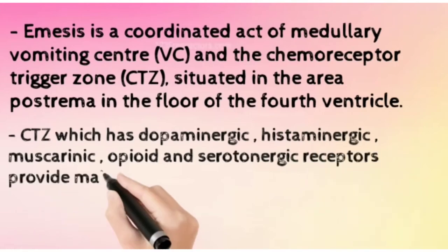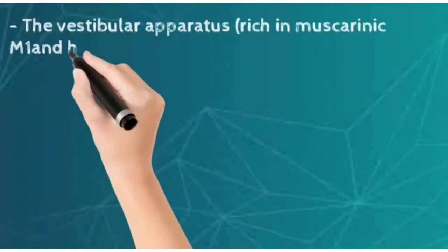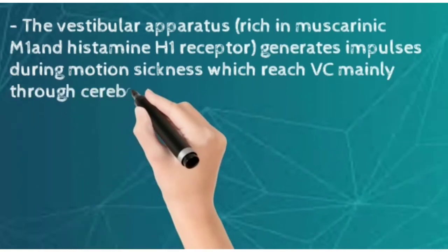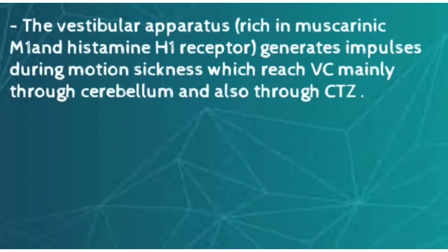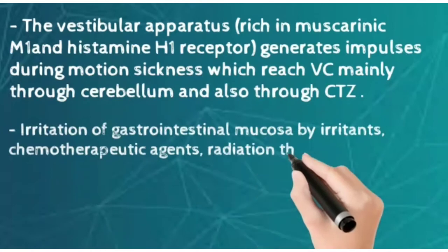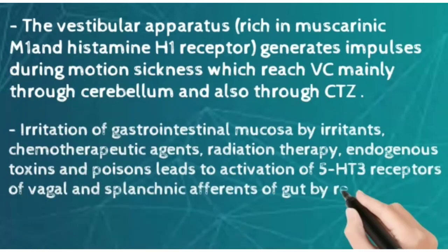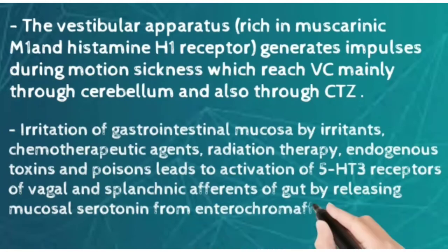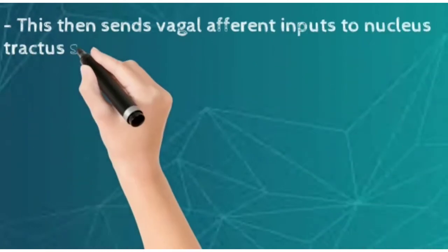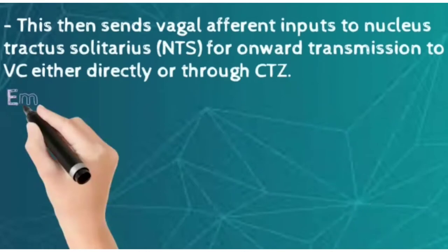The vomiting center receives inputs from various receptors. The vestibular apparatus, with many histaminergic and muscarinic receptors, generates impulses during motion sickness which reach the vomiting center mainly through the cerebellum or CTZ. Irritation of the GIT due to irritants, radiation therapies, or chemotherapies leads to activation of 5-HT3 receptors of vagal and splenic afferents of the gut by releasing mucosal serotonin from the enterochromaffin cells.